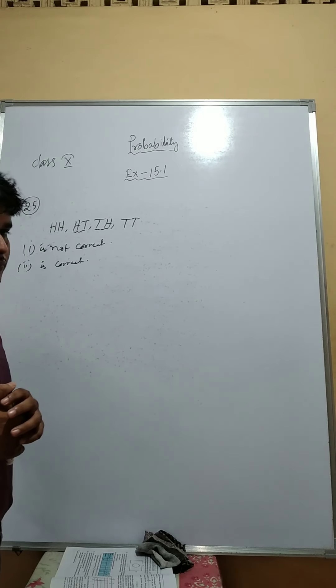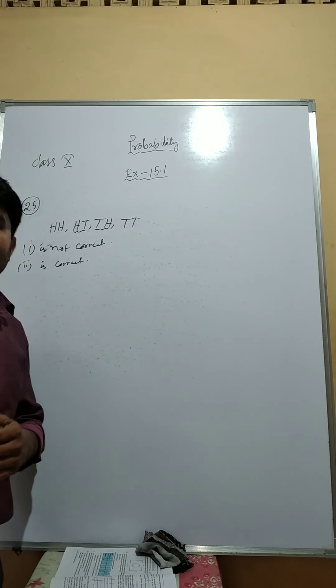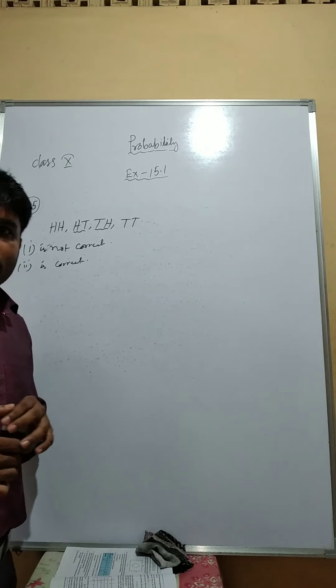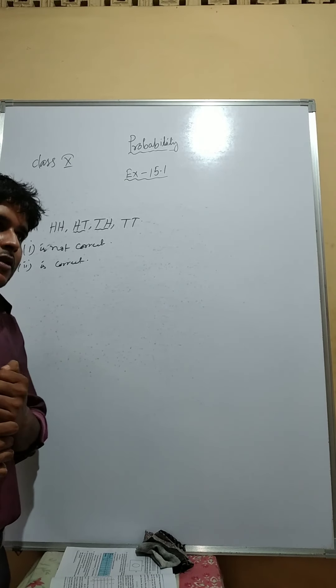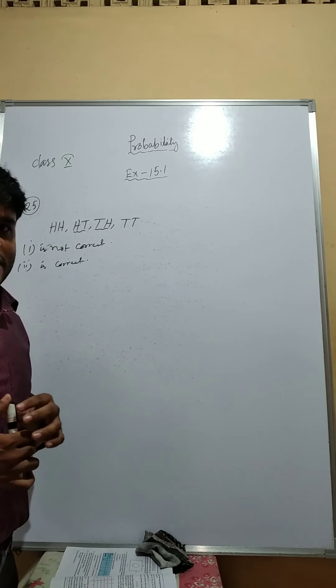This was the last problem, number 25, exercise 15.1. Probability chapter, I have completed. In next class, I will start chapter 13, that is, area, surface and volume.